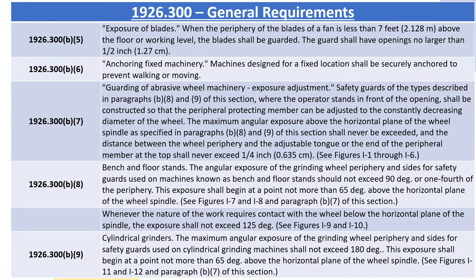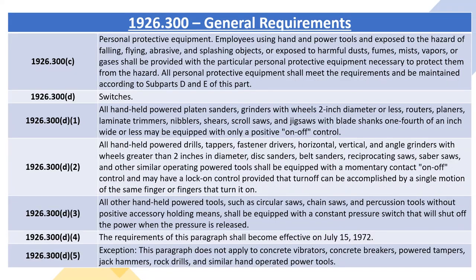1926.300(b)(9) Cylindrical Grinders: The maximum angular exposure of the grinding wheel periphery and sides for safety guards used on cylindrical grinding machines shall not exceed 180 degrees. This exposure shall begin at a point not more than 65 degrees above the horizontal plane of the wheel spindle. 1926.300(c) Personal Protective Equipment: Employees using hand and power tools and exposed to hazards of falling, flying, abrasive and splashing objects, or harmful dusts, fumes, mists, vapors, or gases shall be provided with the necessary PPE.